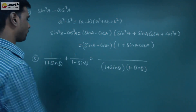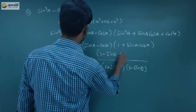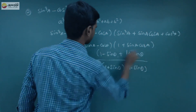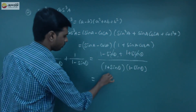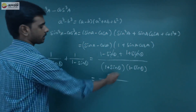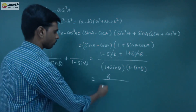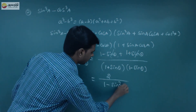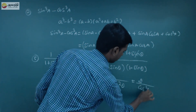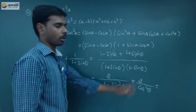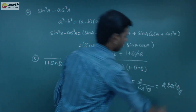By cross multiplication: 1 minus sin theta plus 1 plus sin theta. The plus sin theta and minus sin theta cancel, leaving 2. The denominator is 1 plus sin theta into 1 minus sin theta, which equals 1 minus sin square theta using a plus b into a minus b equals a square minus b square. That gives cos square theta. So the result is 2 by cos square theta, which equals 2 sec square theta. This completes the proof.